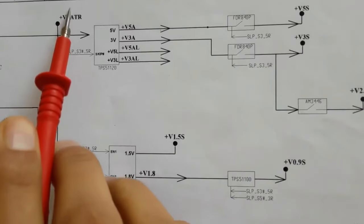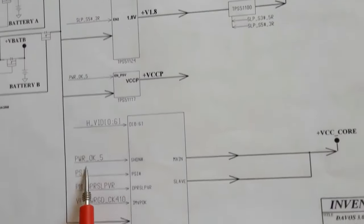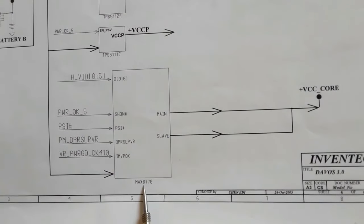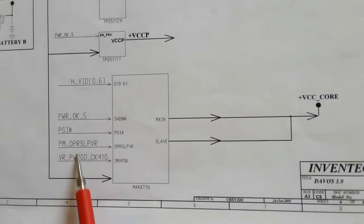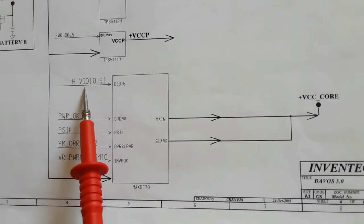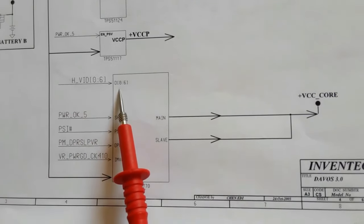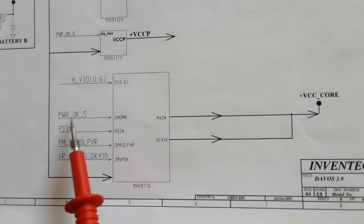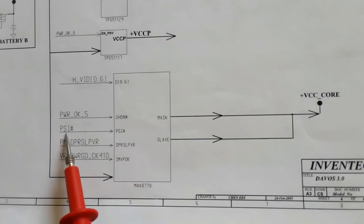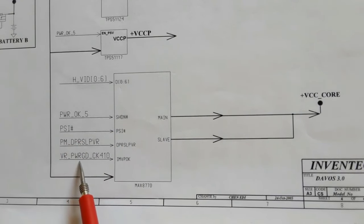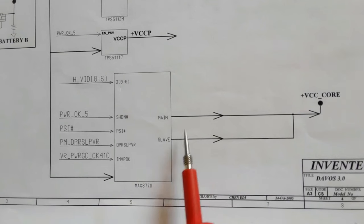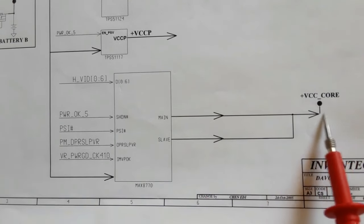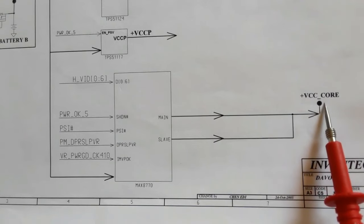VBAT also goes directly to the CPU power management IC, the MAX8770. This IC receives many enable signals and ID signals — about 8 signals — that tell the IC the specific required voltage for the CPU. There are also PSI power management signals. After receiving VBAT, enable signals, and ID signals, the IC generates VCC core through two channels: a main channel and a slave channel.